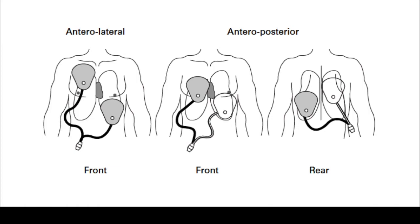Looking at pad placement — most pads that come with the machines will tell you where to place them. Anterior-lateral placement means one pad on the right upper chest and one on the left lower chest. Anterior-posterior placement has the front paddle on the right upper chest and the back paddle on the left lower back of the patient, in the left lower lung area. That's how you place the paddles.